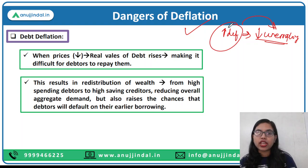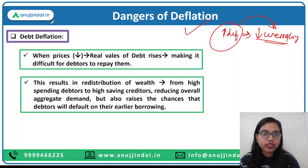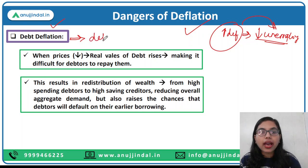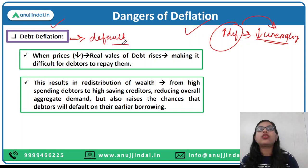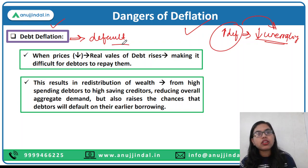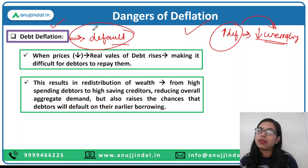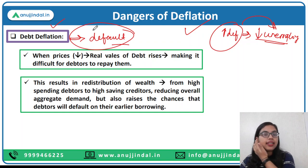The first danger is debt deflation. What is debt deflation? It means that debtors are now less incentivized to make payment of the debt they have taken, resulting in default by the debtors. The people who have taken loans find it very difficult to make payment during the deflation period, and that is the reason why they default on making the payment — they do not repay the money they have borrowed. That is debt deflation.